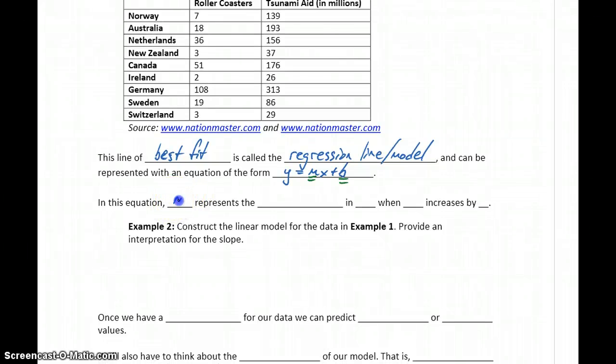So in this equation, m, which is our slope, represents the change in our y variable whenever the x variable is increased by 1.